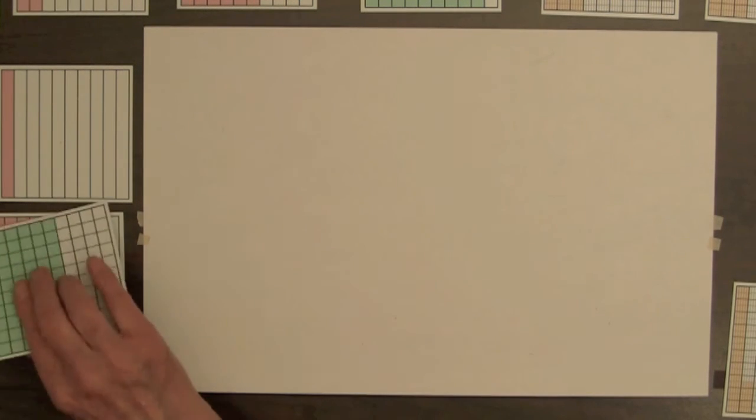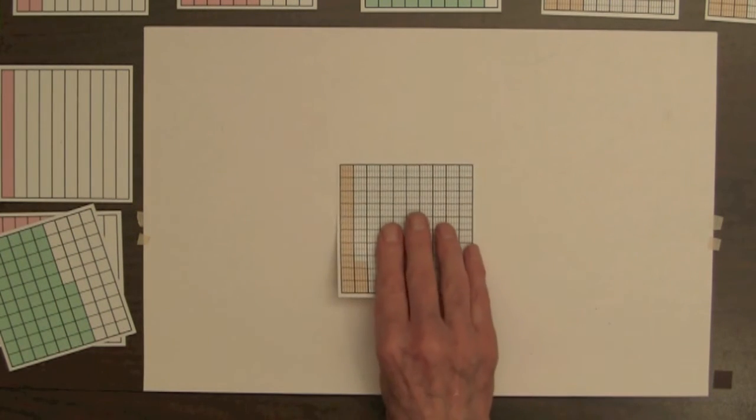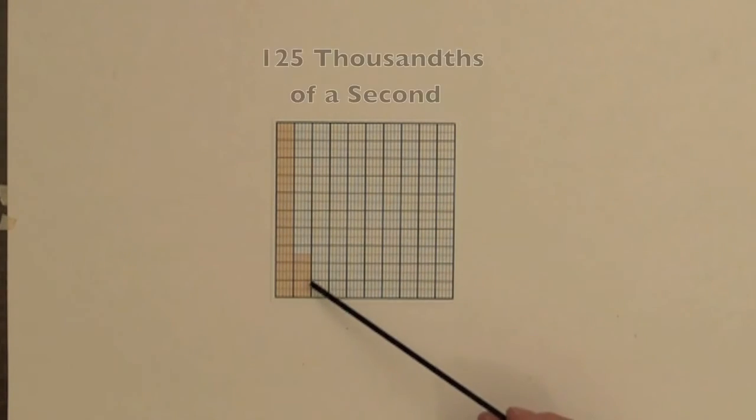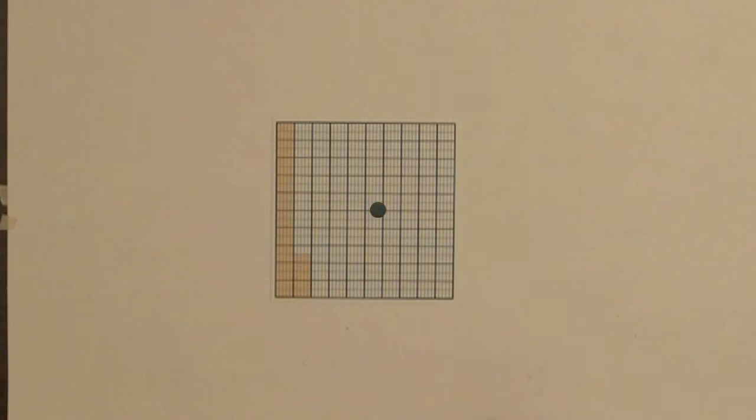In track meets, time is measured to thousandths of a second. If this whole square represents one second, then the shaded amount of the square represents 125 thousandths of a second.